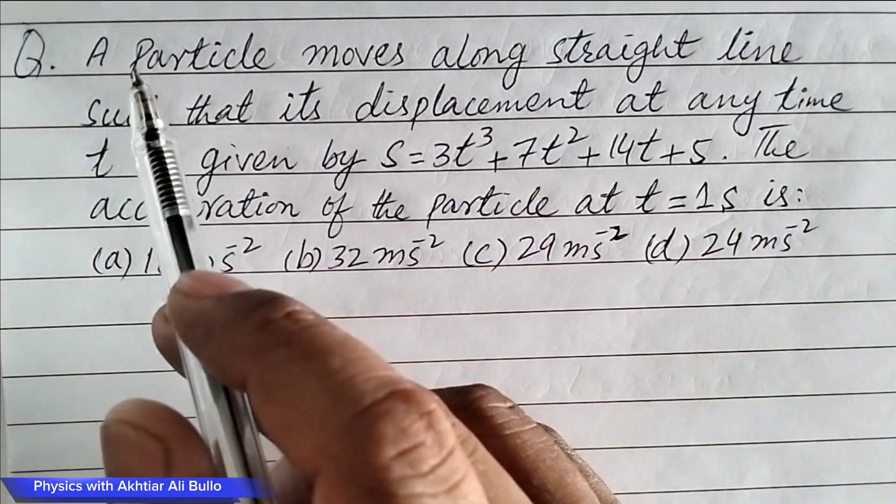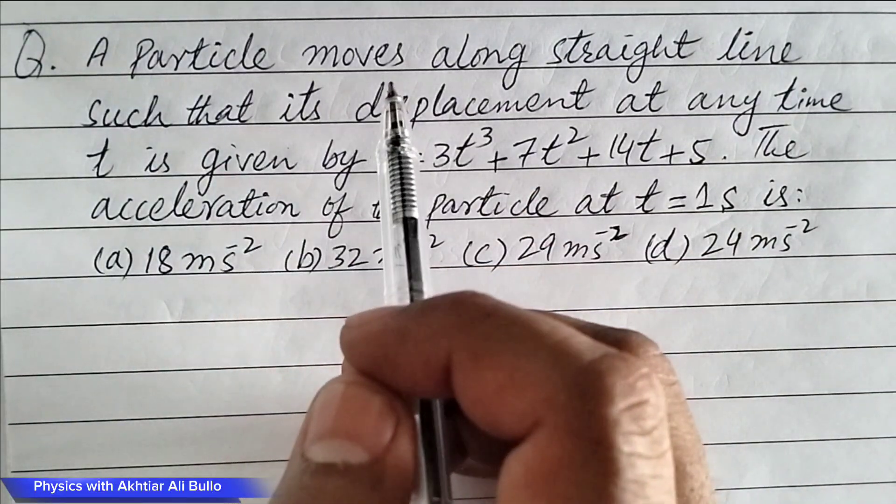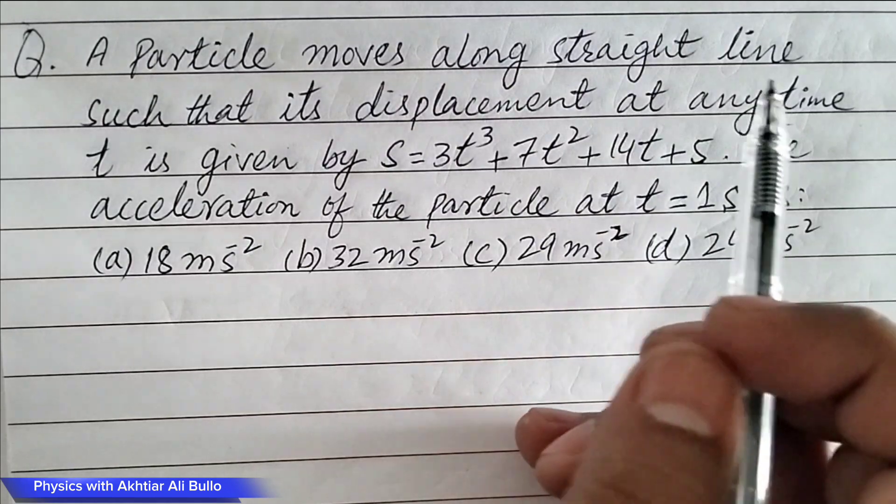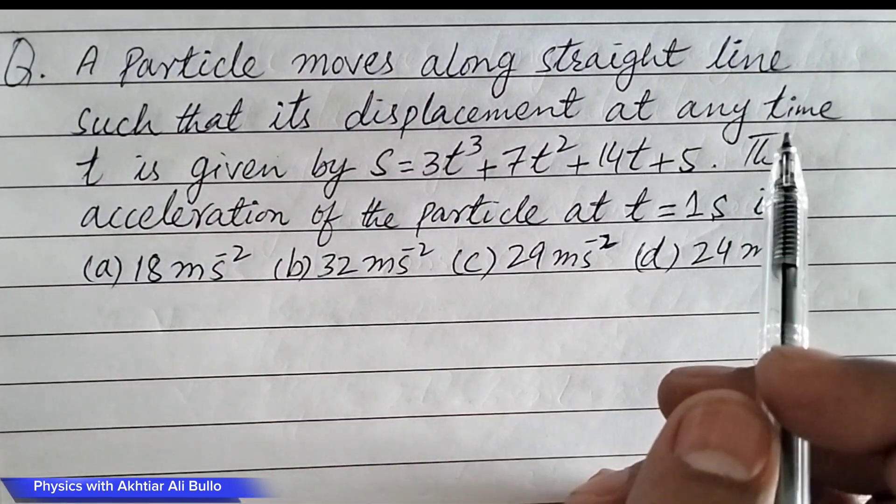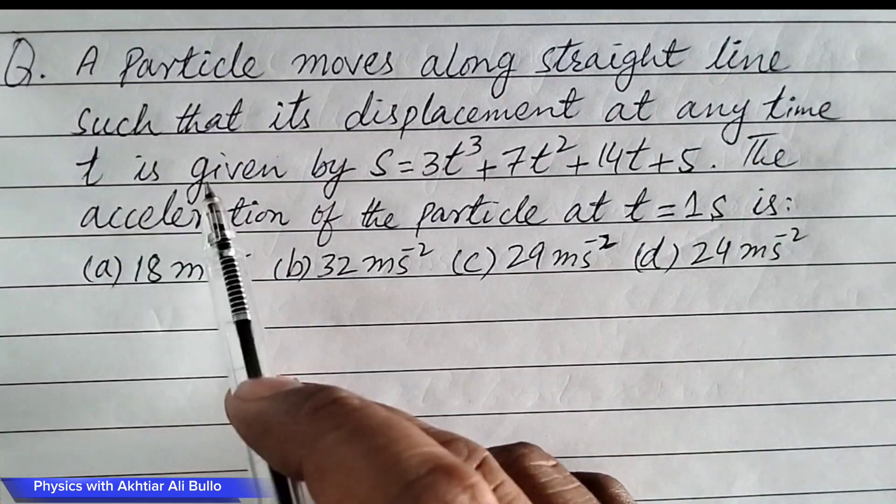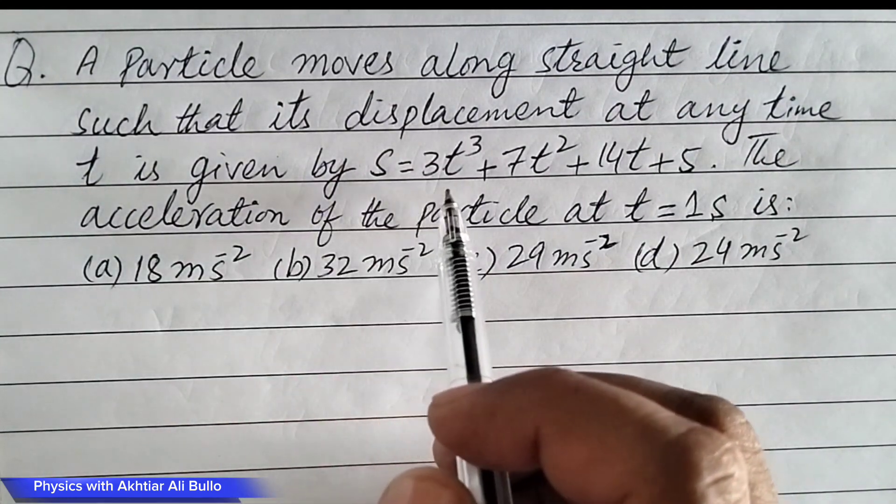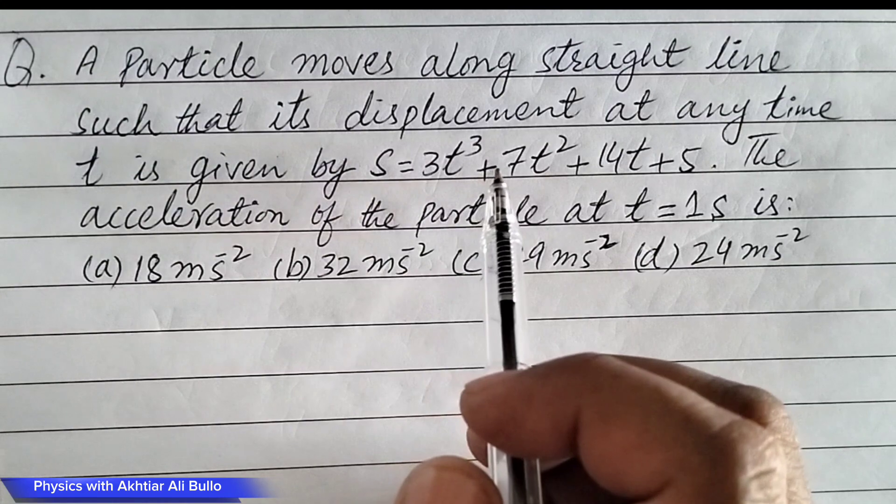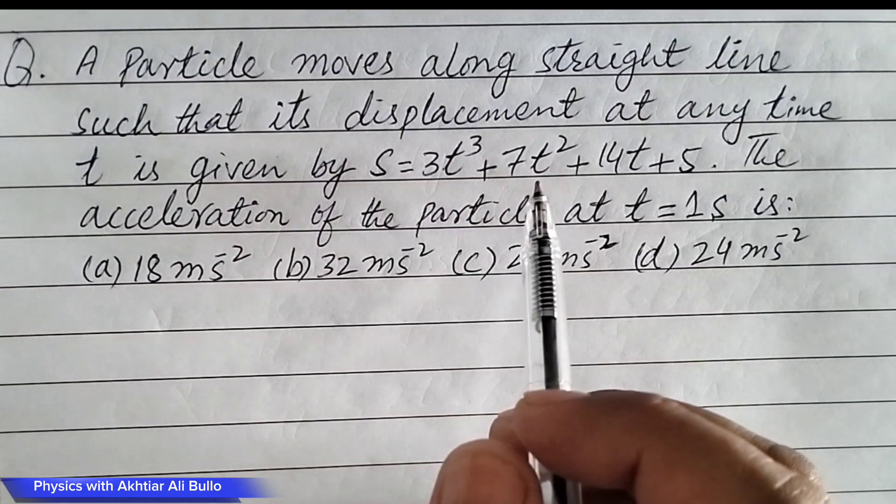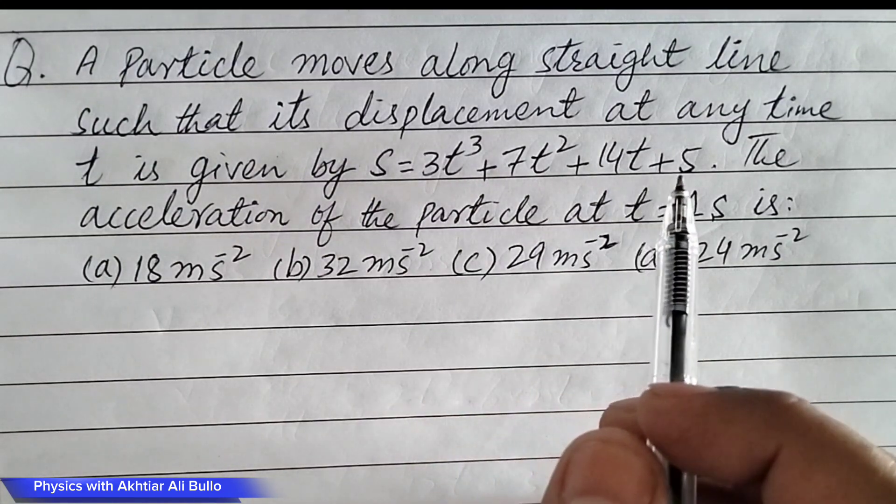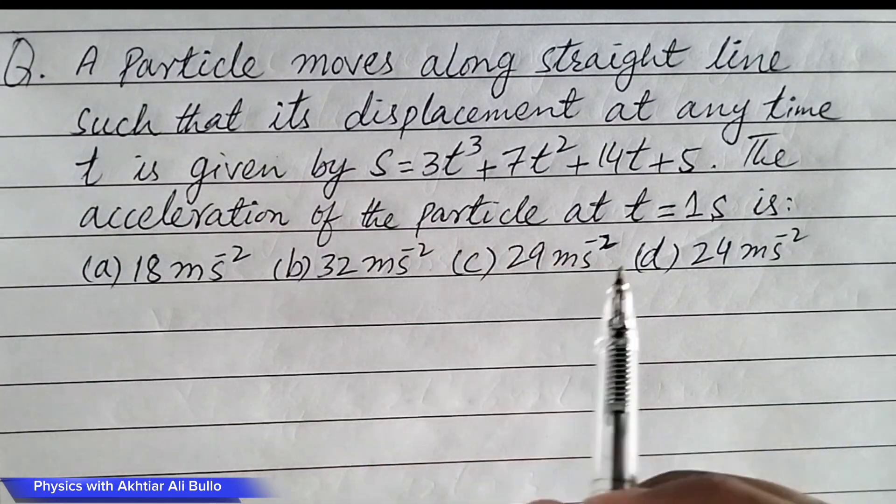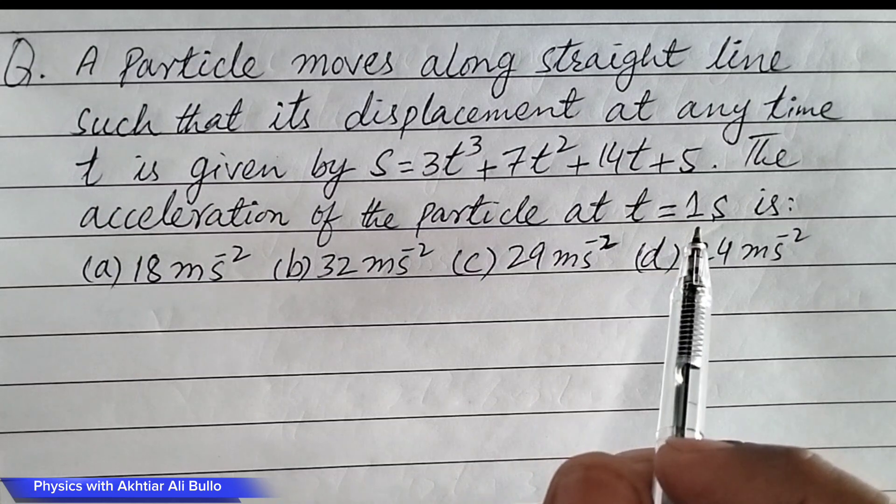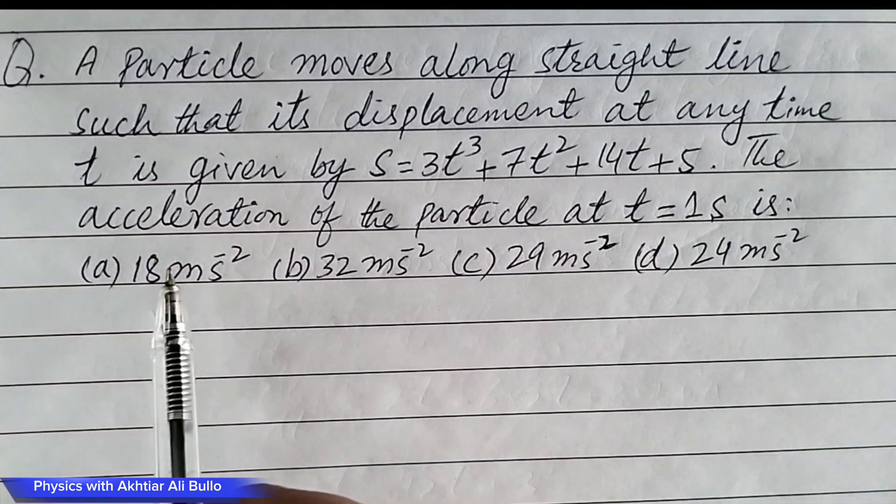The question is: a particle moves along straight line such that its displacement at any time t is given by s equals 3t cube plus 7t square plus 14t plus 5. The acceleration of the particle at t equals 1 second is: